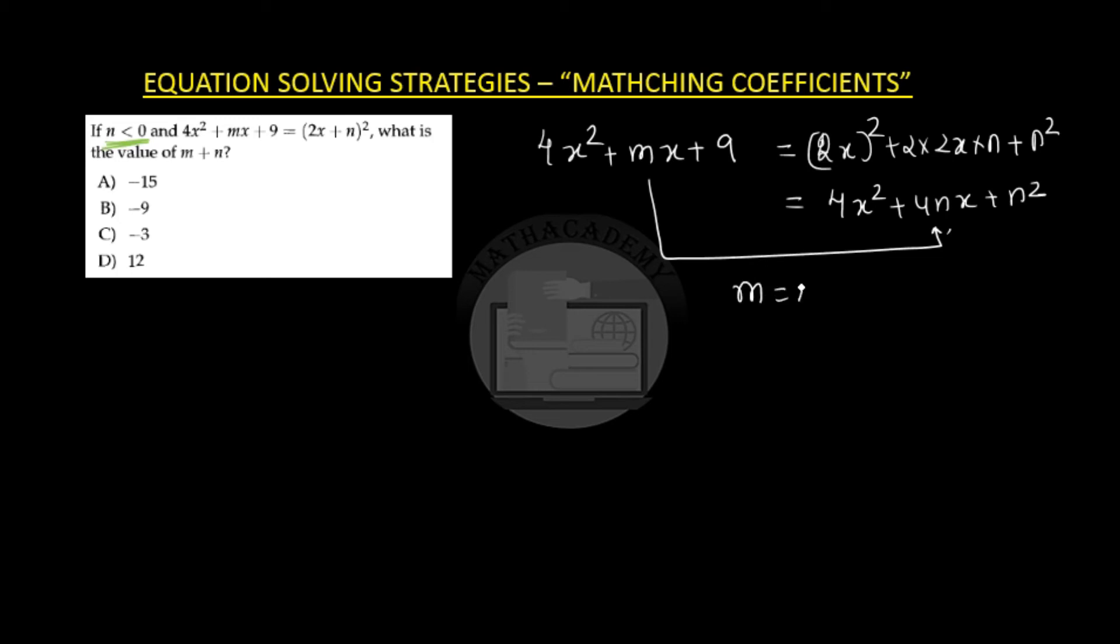So m is equal to 4 times n and 9 is equal to n square. So if 9 is n square, n can be either positive 3 or negative 3. Why? Because n is equal to square root of 9.